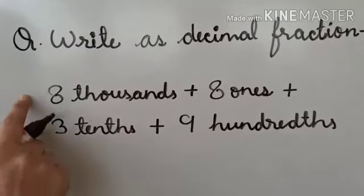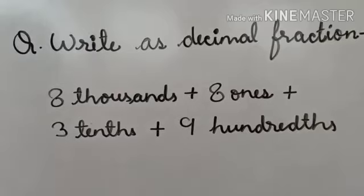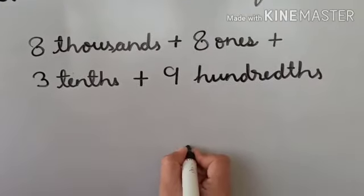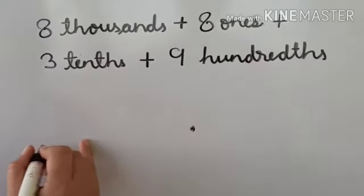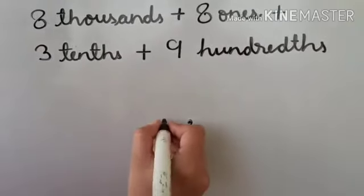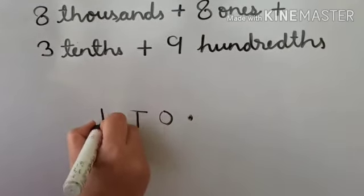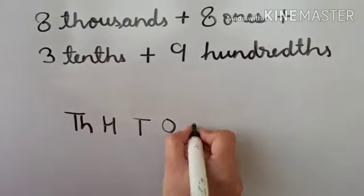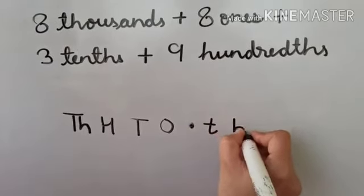To write as a decimal fraction, first of all we mark a decimal. Further we write the places of integral part as ones, tenths, hundredths and thousandths. Further we mark the decimal places tens, hundredths and thousandths.